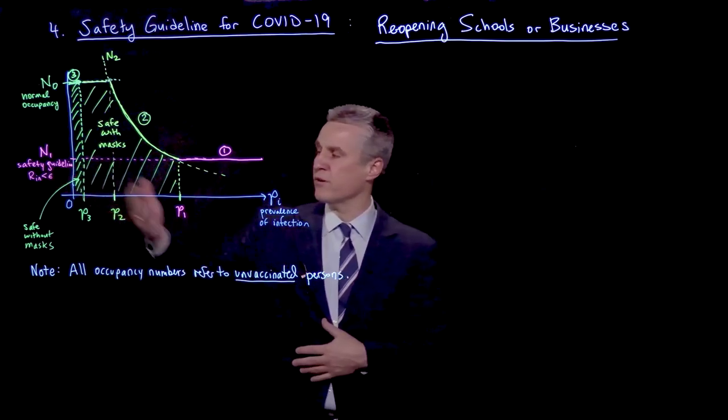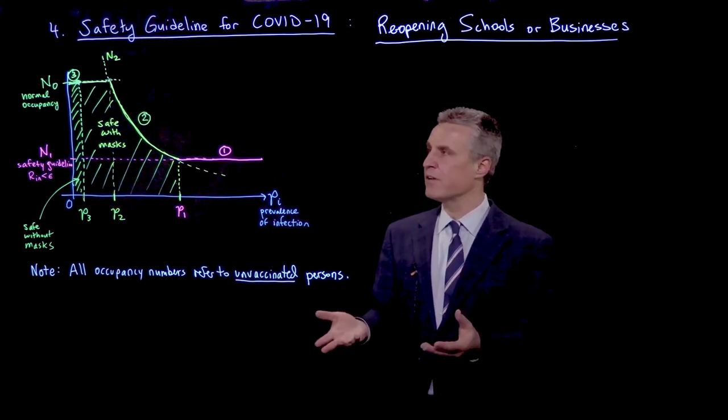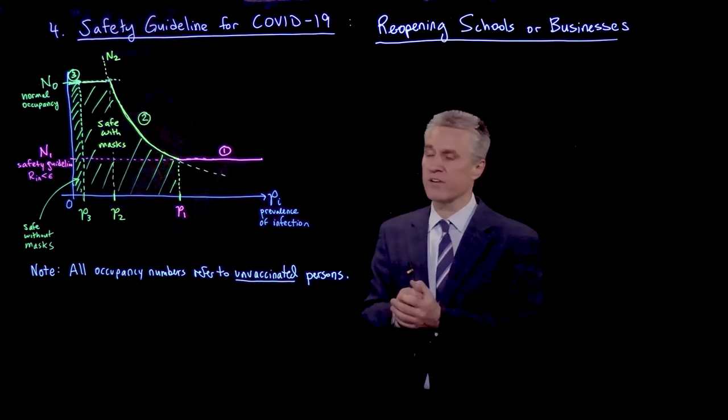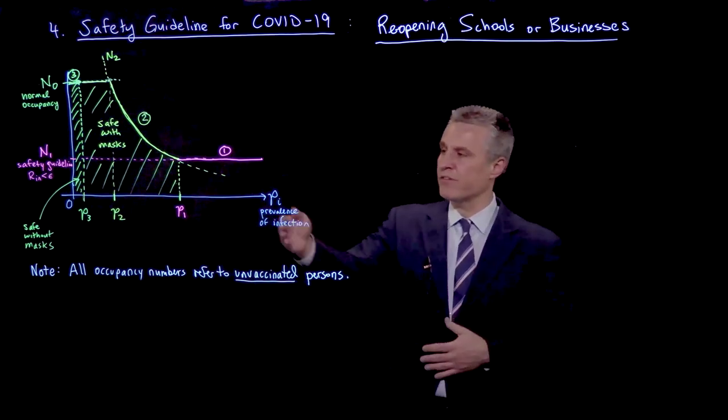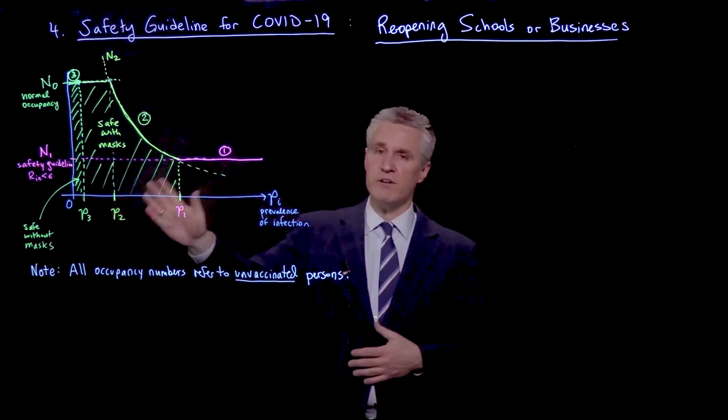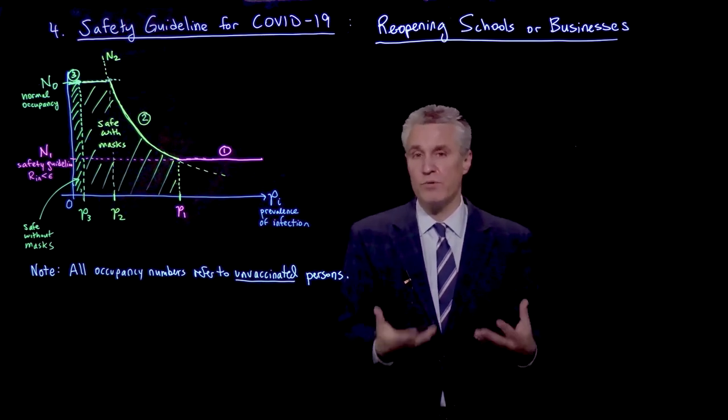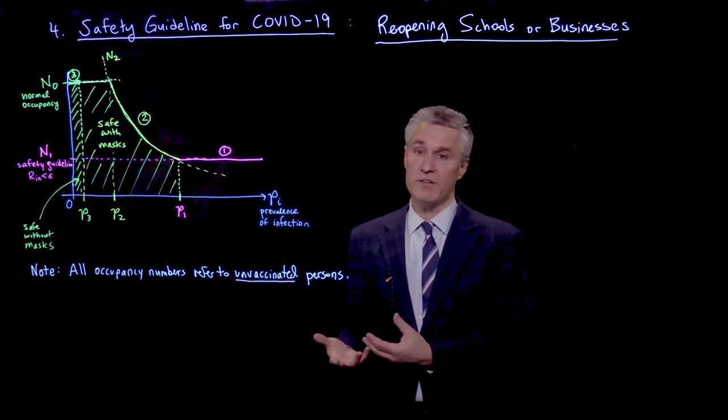That would, for example, give us some number N1 from the safety guideline, Rn less than epsilon, which is going to be smaller than the normal occupancy of that room for a given time and all the other factors that we've been discussing. But what happens as the prevalence of infection goes down? Generically, there must be some sort of curve like this, and we'd like to understand what is the simplest reasonable model we can come up with that can tell us how to relax the restrictions.